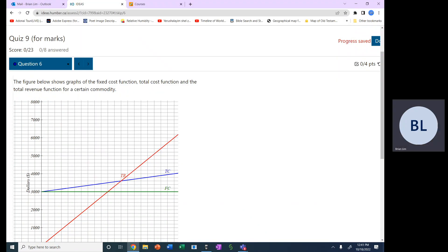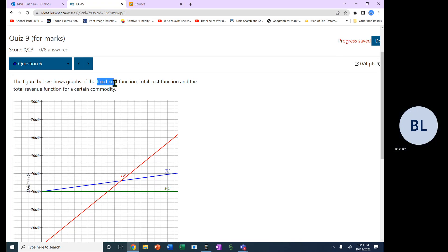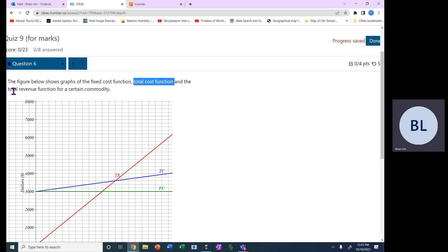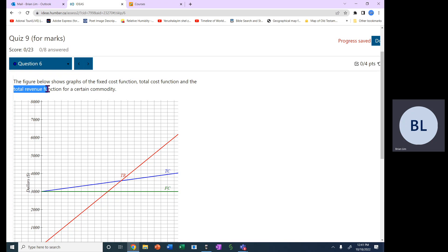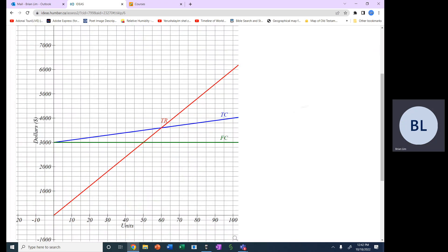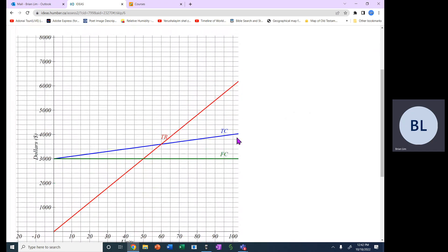Okay, this is quiz 9 question 6. The figure below shows graphs of the fixed cost function, total cost function, and the total revenue function for certain commodities. So that is the fixed cost, FC, it means fixed cost. CC right there is the total cost and total revenue is this red line right there.